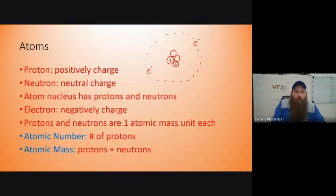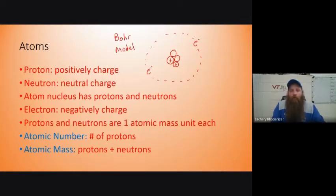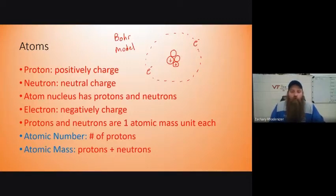This is called a Bohr — B-O-H-R — model of an atom. In real life, electrons don't actually orbit like planets around the sun, but this is usually the way that we draw them.